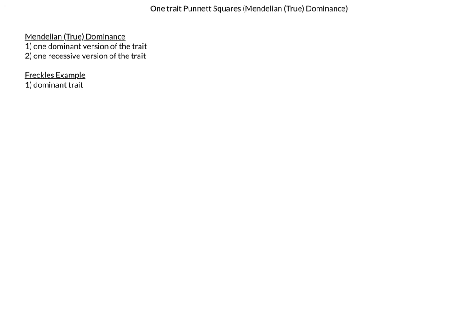Let's do freckles, which is a dominant trait, and let's use F's for freckles. Let's say we have a cross between two heterozygous individuals. The first thing we would have to do is determine what the potential alleles are that each individual can contribute to the cross.